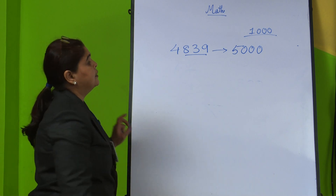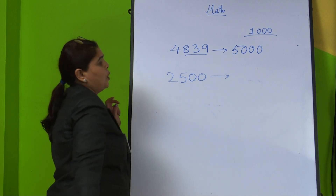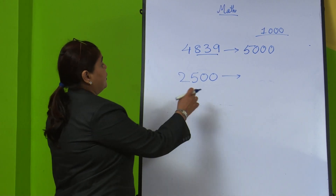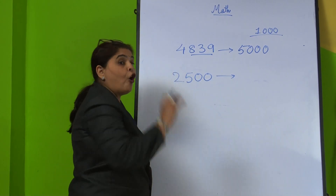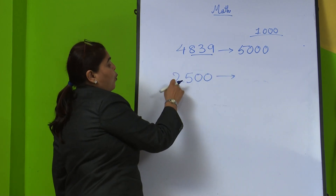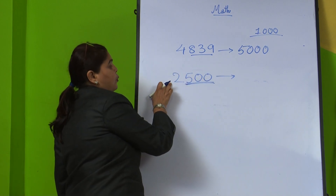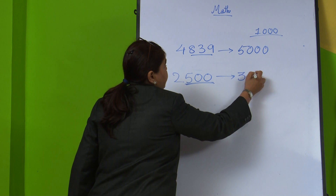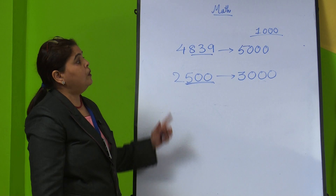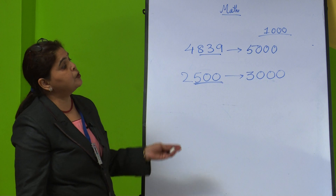When it is 5 or more than 5 we go to the next number. Another example: 2500 — the last 3 digits are 500, which equals 500. Since it is equal to 500, we add 1 to the before number, so 2500 rounds to 3000. Similarly for rounding to nearest 10000, 10000 has 4 zeros, so we underline 4 digits to find the rounded number.